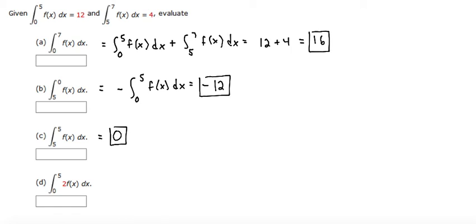For part d, we just have a coefficient, so we can bring our coefficient through. 2 times the integral from 0 to 5 of f of x dx.